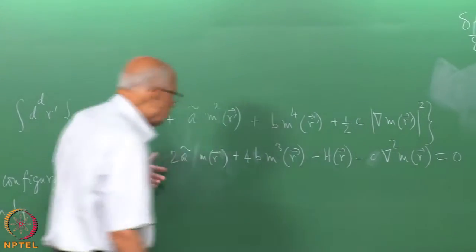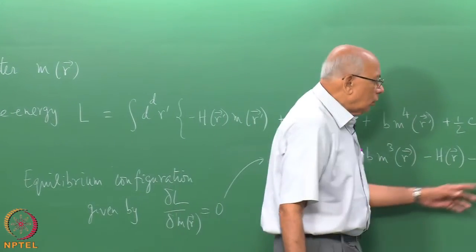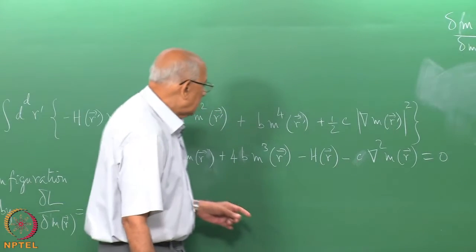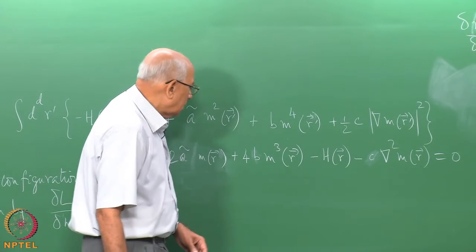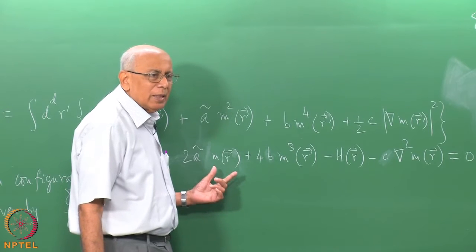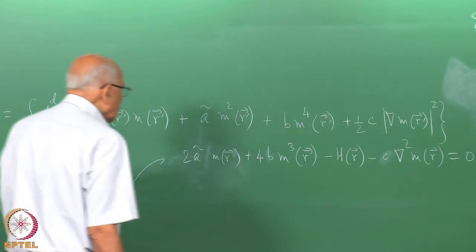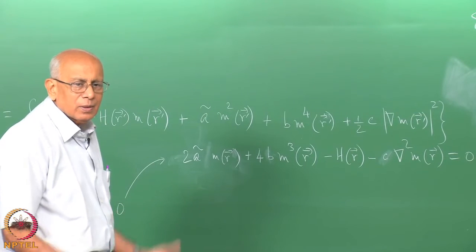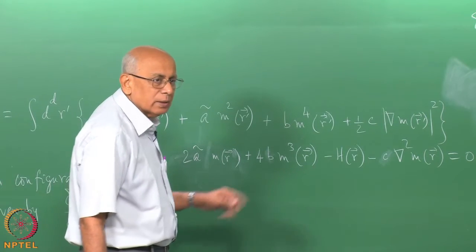That is the equilibrium configuration — a solution to a partial differential equation in space, like the Schrödinger equation, but with a nonlinearity. There is an inhomogeneous term due to H of R which is not serious, but the M-cubed nonlinearity is unavoidable. So from the start it is obviously a nonlinear situation.